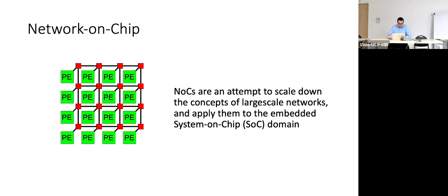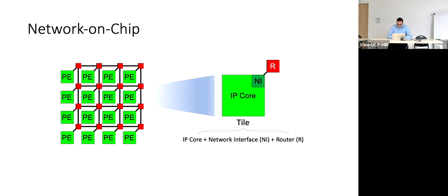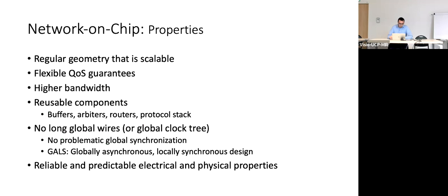NoC was an attempt to scale down the experience with computer networks and apply it to system-on-chip — an electronic device in which a full system is found, capable of getting inputs, processing them, storing intermediate information, and creating an output. Each element of this kind of system is made of nodes called tiles, composed of three parts: the computation core, a network interface, and a routing element. So we have processing elements (PE) and routing elements in this connection.